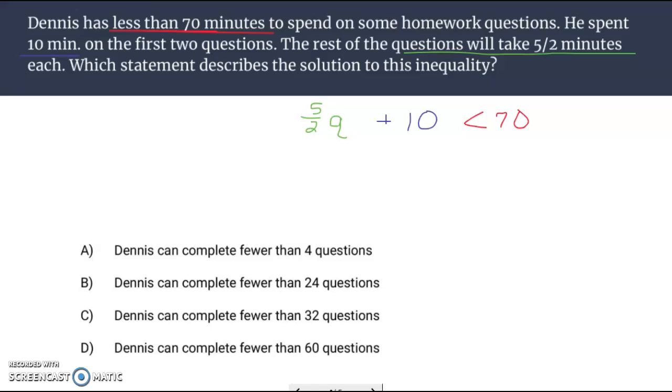Let's go about solving this now. First we're going to take away 10. Leaves us with five halves Q less than 60. Now we need to get rid of the fraction. We'll get rid of it by multiplying by its reciprocal. Five halves times two fifths. Now Q is by itself. 60 times two fifths. Think of it as 60 times 2 divided by 5.